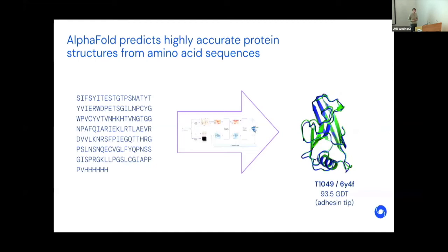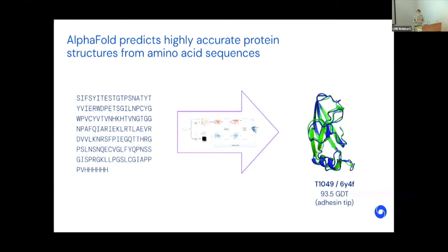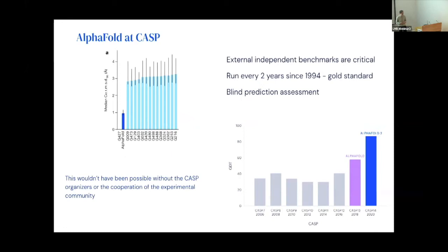Being able to do this at scale is really important and really interesting for what it means about what other problems we may be able to solve. One of the really important parts of the story has been CASP — the critical assessment that runs every two years. What's really important about CASP is that it's blind: participating groups have to do it as if their credibility is on the line and can use whatever methods they want because they don't know the answer.